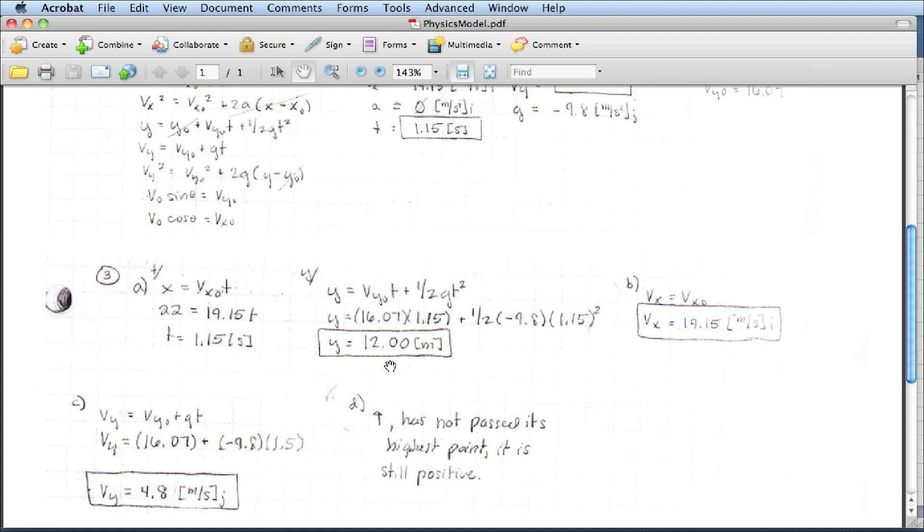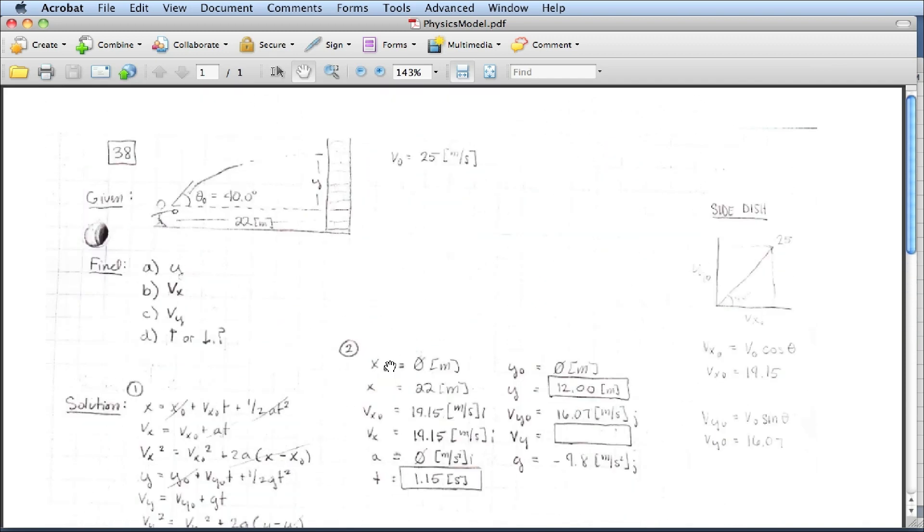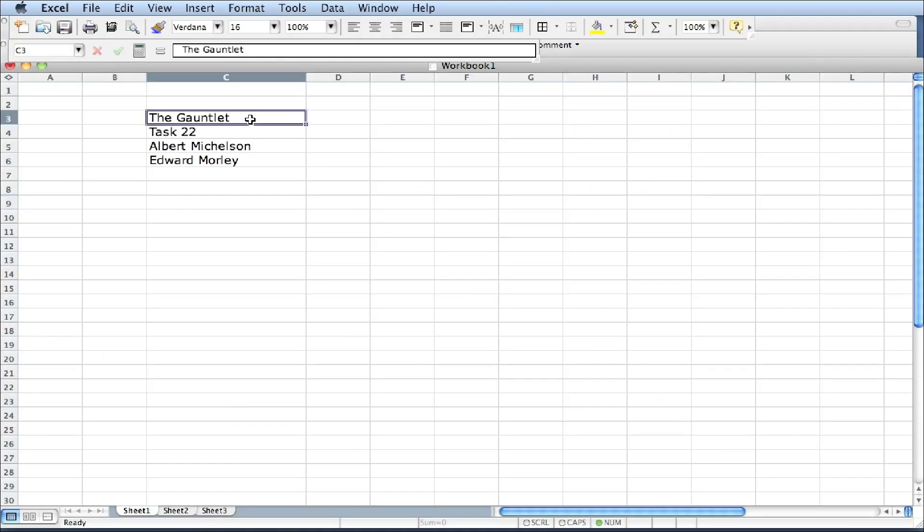So let's take a look at how you would model this in Excel. And the parameters here are the initial velocity, the x distance from the wall, and the angle of theta, which is 40 degrees. So your spreadsheet model is going to look something like this. It's going to have the gauntlet, whatever task you're working on, and then the names of the group members. You just need one spreadsheet model per person, whereas in the physics model you just saw there's one per person.